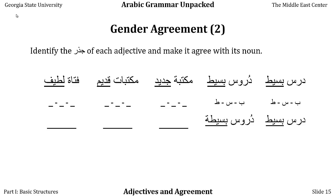In our next example, we have maktaba — which can mean library or bookstore depending on context — and the adjective jadid, which means new. Its root is jim-dal-dal. Maktaba is feminine, as you can tell from its ta' marbuta, so we need to make jadid feminine as well — we add ta' marbuta to make jadida. So maktaba jadida, a new library or a new bookstore, again depending on context.